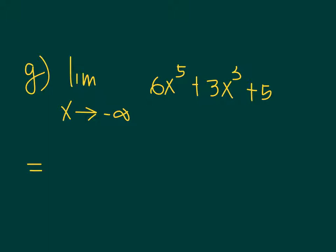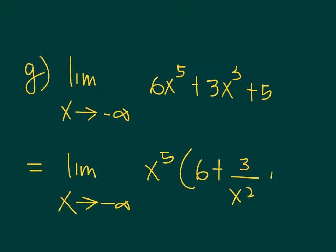Solution: factor out. So limit as x approaches negative infinity, factor out x to the 5th. You have 6 plus 3 over x squared plus 5 over x to the 5th.